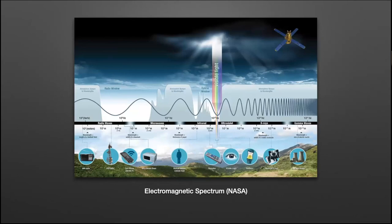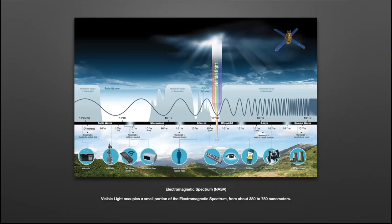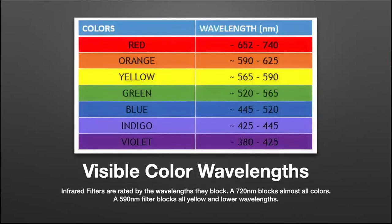To understand how to approach infrared photography, you have to have a basic idea of the electromagnetic spectrum — I grabbed this off the NASA website. The electromagnetic spectrum covers everything from radio waves to gamma waves, and visible light is that tiny portion from 380 to 750 nanometers. The part for infrared involves 750 to 1400 nanometers, but for infrared photography we're really only using the lower portion, 750 to 1000 nanometers.